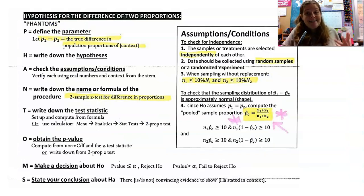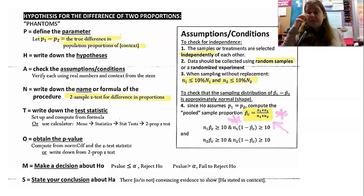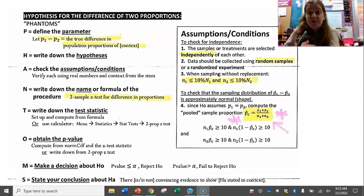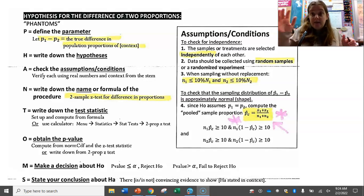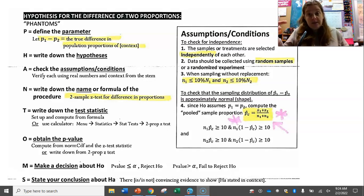This is just like before — we are still going to use PHANTOMS. Start with P: define the parameter. You can define it as P1 minus P2, the true difference in population proportions in context — referencing those populations and the proportion of what — or you can define them individually as P1 equals and P2 equals, and then state which direction you're subtracting. Then write down your hypotheses: the null is always P1 equals P2, and then you'll have some inequality for the alternate hypothesis.